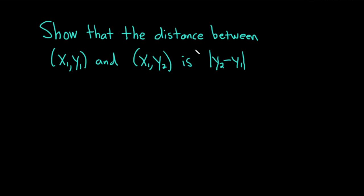In this problem we're going to show that the distance between the point (x₁, y₁) and (x₁, y₂) is the absolute value of y₂ minus y₁.